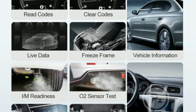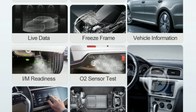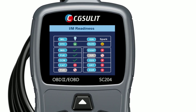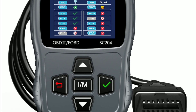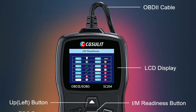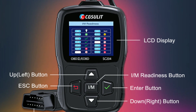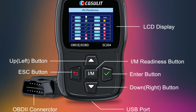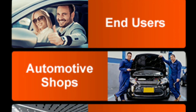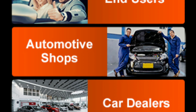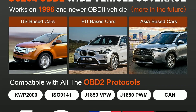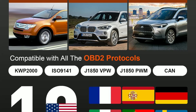Now let's talk about the features that make the Chuselit SC204 stand out. It's equipped with a large color display that provides clear and easy-to-read information. The user interface is intuitive, making it suitable for both beginners and experienced mechanics. Plus, it supports multiple languages, so language barriers won't be a problem.